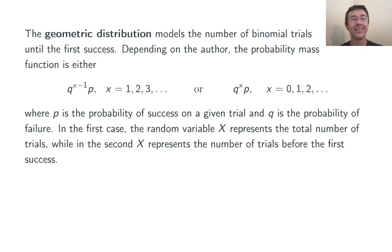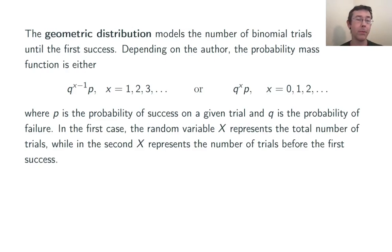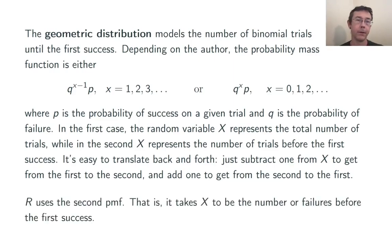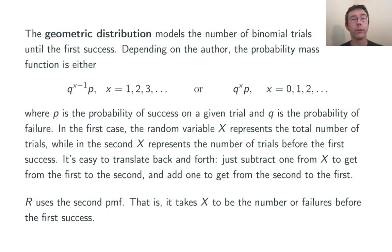Unfortunately, there's not a single standard PMF for the geometric distribution. You'll see these two both used depending on what author you're reading. Fortunately, it's not hard to translate back and forth between the two — you just add or subtract one, as the case may be. It's important to remember that R uses the second of these PMFs; that is, it's taking x to be the number of failures before the first success.